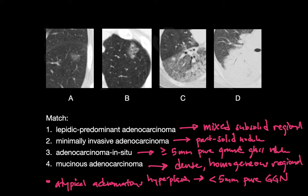In the four examples shown, the first nodule was an adenocarcinoma in situ, the second was a minimally invasive adenocarcinoma, the third case was lipidic predominant adenocarcinoma, and the fourth case was invasive mucinous adenocarcinoma. Historically, adenocarcinomas in situ, minimally invasive adenocarcinoma, lipidic predominant adenocarcinoma, and invasive mucinous adenocarcinomas used to be referred to in aggregate as bronchoalveolar carcinomas or BACs.